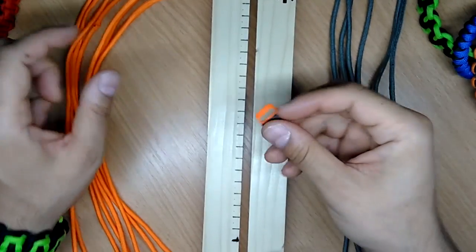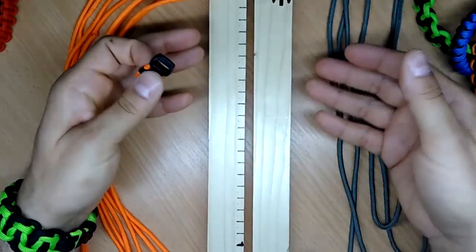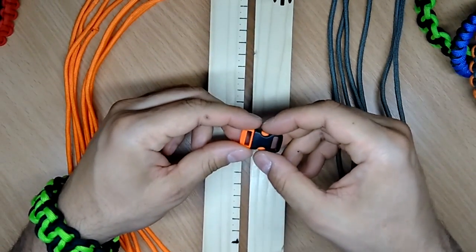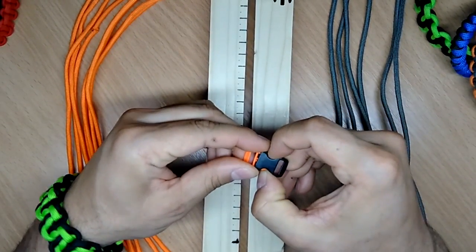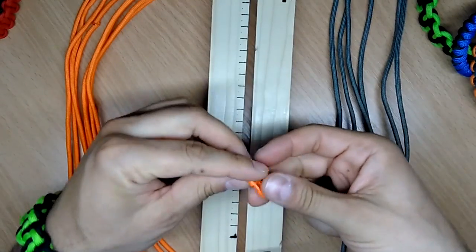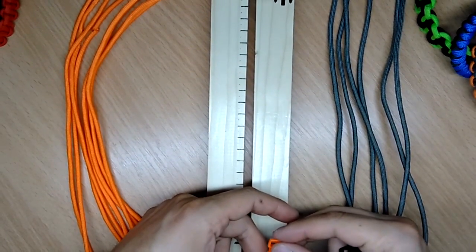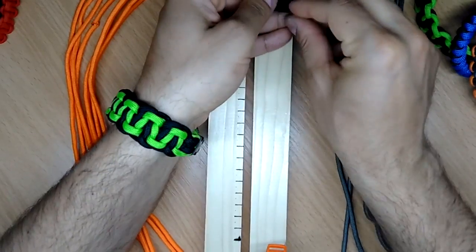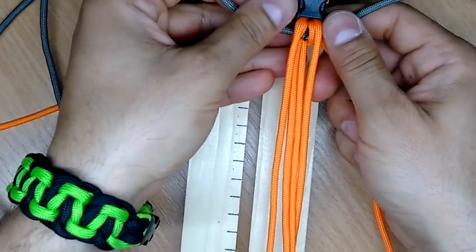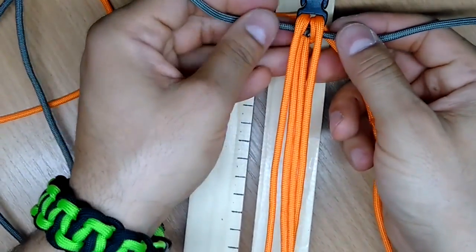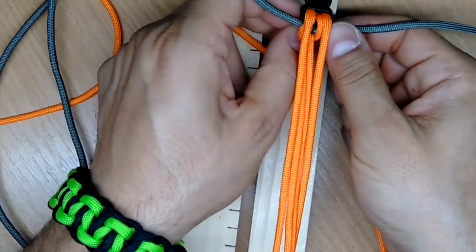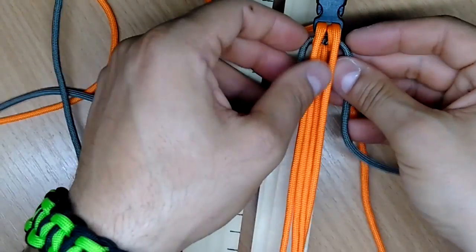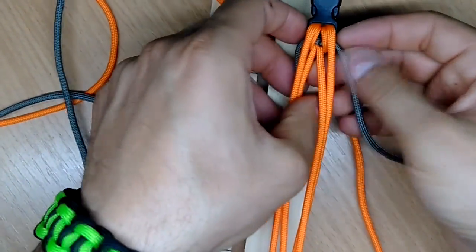We're also gonna need buckles and of course the paracord rig or jig. Now, insert the buckles into the jig. When we pull this gray one through the center, we're gonna pull it right in the middle.